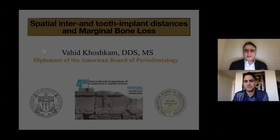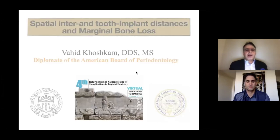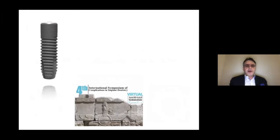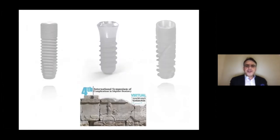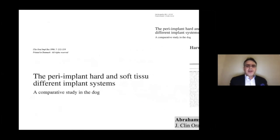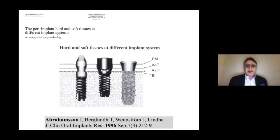I'm going to talk about spatial inter- and tooth-implant distances and marginal bone loss. Daily, millions of implants are being placed in the mouths of patients. No matter what the design, texture, surface, or length, what happens after implant placement is that a soft tissue seal of about four millimeters in height will get established around these osseointegrated implants.